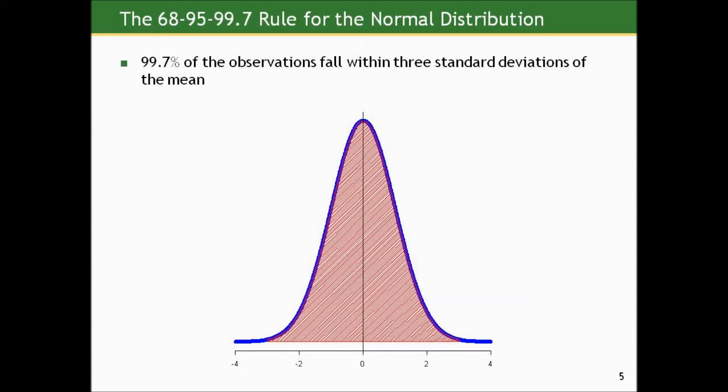Now, in a true theoretical normal distribution, the tails go on forever, but there's very, very small proportion of observations in those tails beyond three standard deviations. Those are three numbers I'd like you to be familiar with for the rest of the course. For any other normal curve-related computations, we'll turn to the computer.